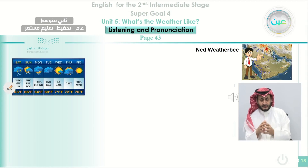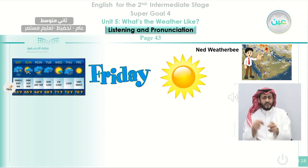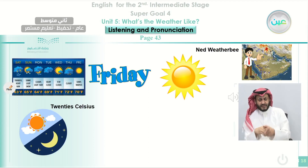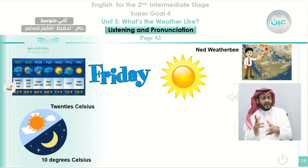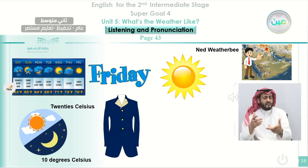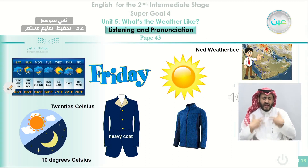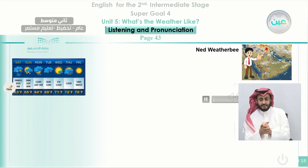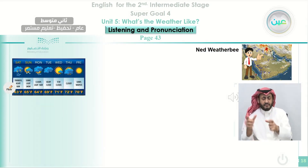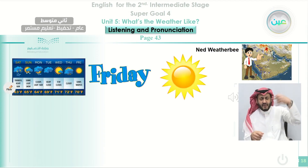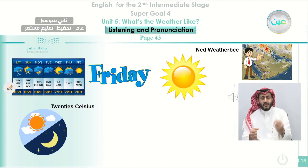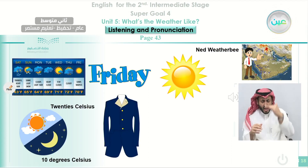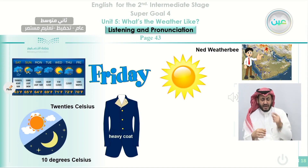The second part gives more details about Friday. You can guess from the symbols that it will be sunny. You also need to know what the weather will be during the day and at night, and whether you need a coat or a jacket. 'Now, let's look at the weather report for the next few days. Friday will be warm and sunny during the day and cool at night. Temperatures will be in the low 20s during the day and will fall to 10 degrees Celsius at night. You won't need a heavy coat, but take a jacket with you.'